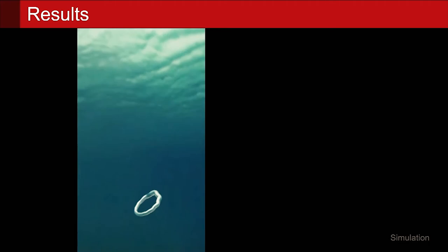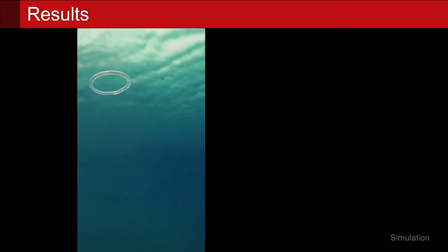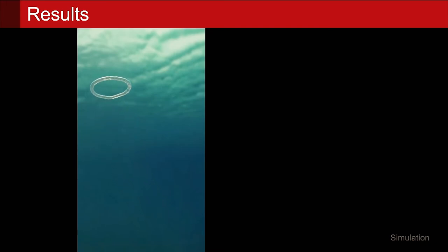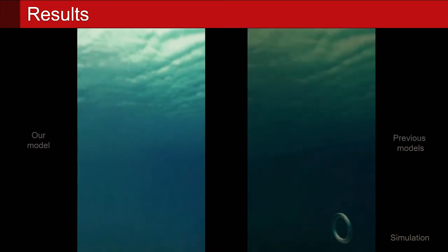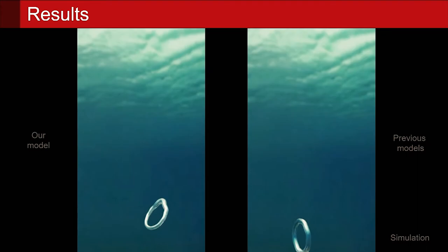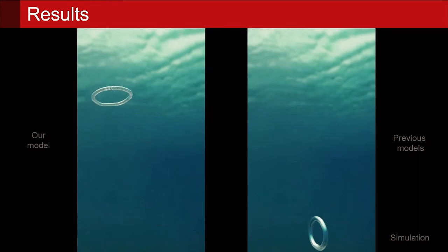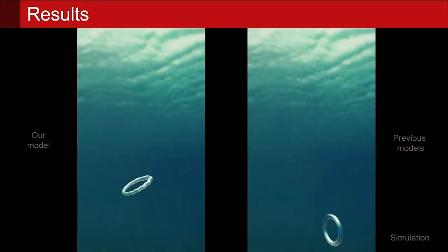Next we have a bubble ring that we shoot out vertically. We see that it turns nicely and comes up in a horizontal setup. This is of course an effect of gravity, and with previous vortex filament methods none of this would have happened.